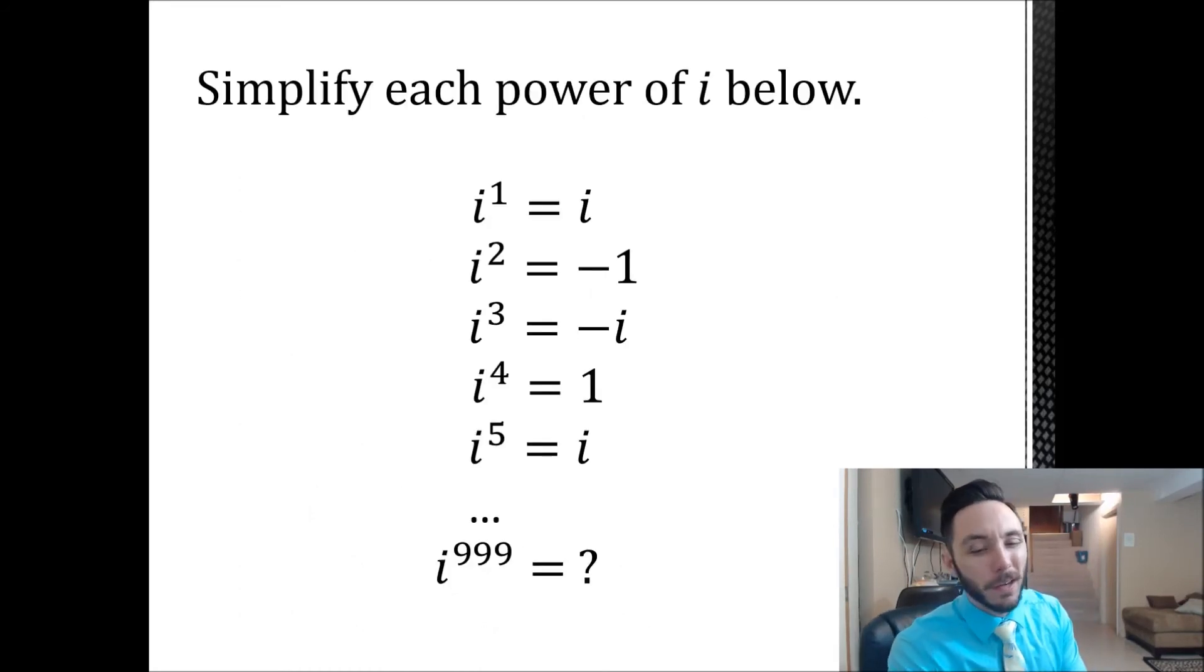So maybe take a stab at what i to the 999th might be. You can also just guess. You've got a one in four shot. So this ends up being negative i, and the next one just follows that pattern. We know that one is to follow.